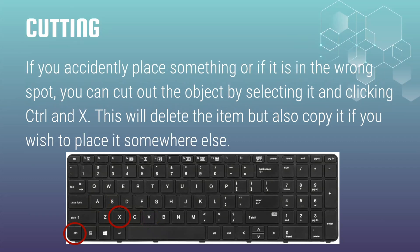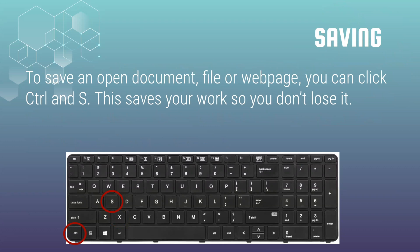Cutting. If you accidentally place something or if it's in the wrong spot, you can cut out the object by selecting it and selecting control and X. This will delete the item, but you can also copy it if you wish to paste it somewhere else. To save an open document, you're going to use control and S. This saves your work, for example, if you're trying to save a Word document.